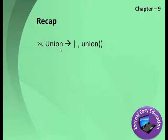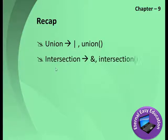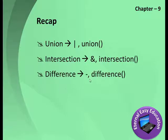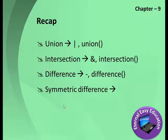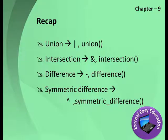Recap: Union combines all elements — use the pipe (|) symbol or union() function. Intersection gives only common elements — use the & symbol or intersection() function. Difference gives elements in A not common with B, or elements in B not common with A — use the minus (-) symbol or difference() function. Symmetric difference prints all elements except common ones — use the caret (^) symbol or symmetric_difference() function. Thank you, have a good day.